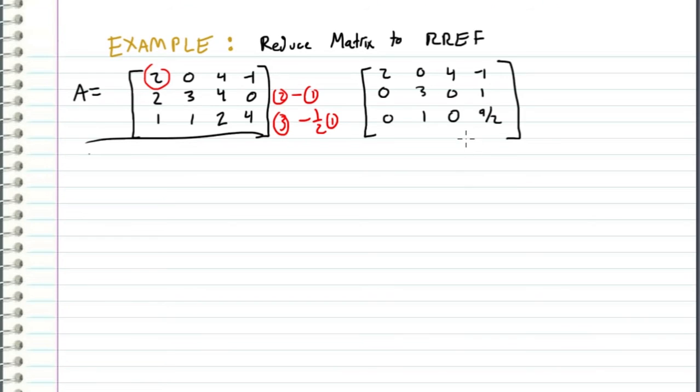So now, we'll use this guy as a pivot to knock out this 1. So we'll take the third row, and we'll subtract 1 third times the second row.